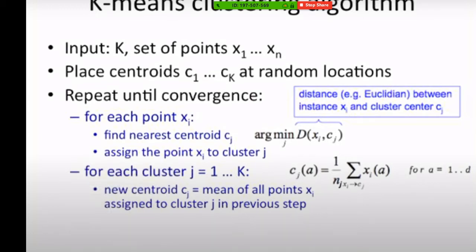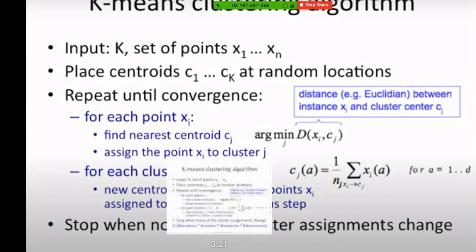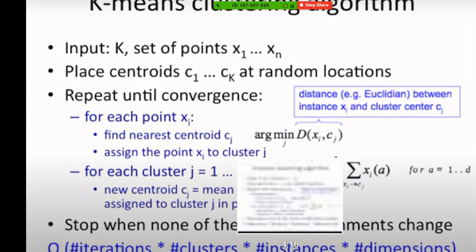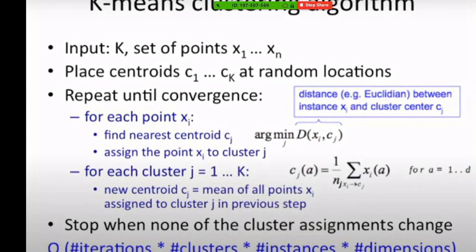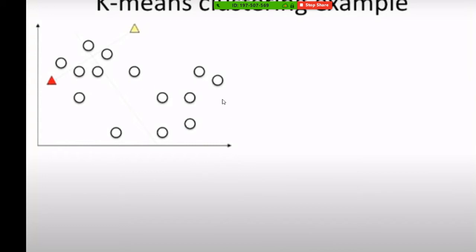You have a new centroid, then you repeat it again and again. Finally, this algorithm will converge and you have the final result. This is a very simple algorithm. You only need to define how to calculate the distance, then calculate the centroid, then do the recursive calculation. Finally you will find the result.